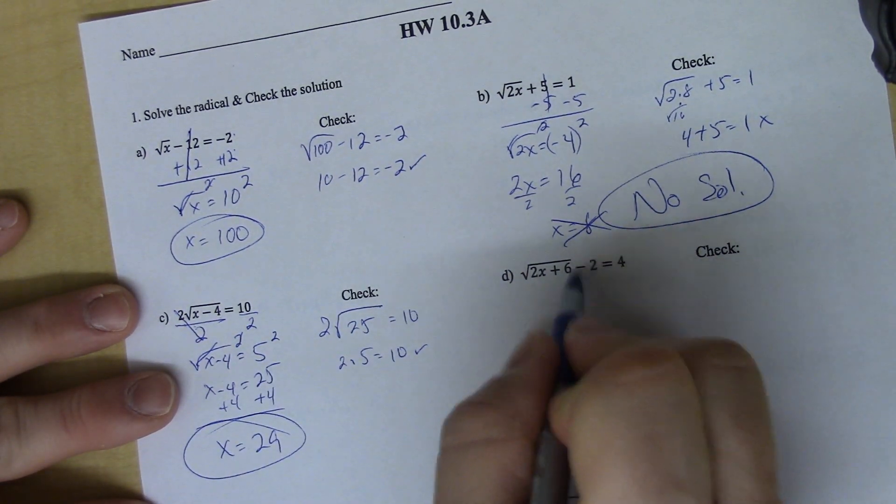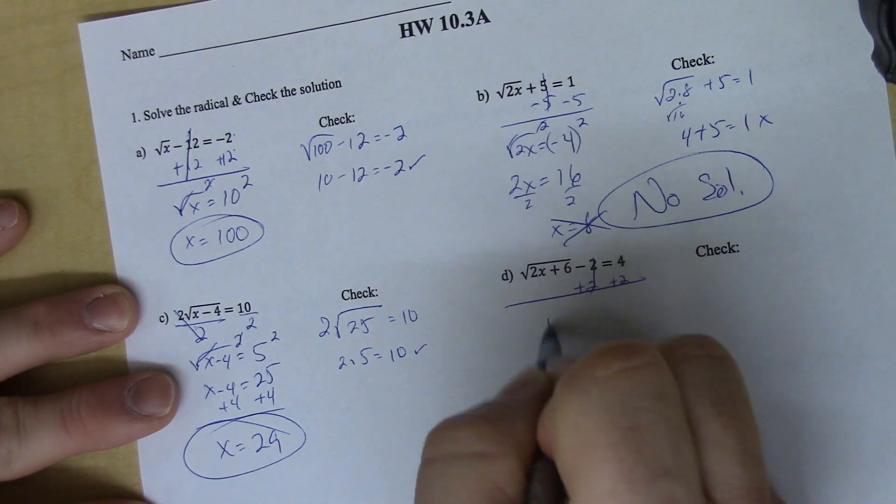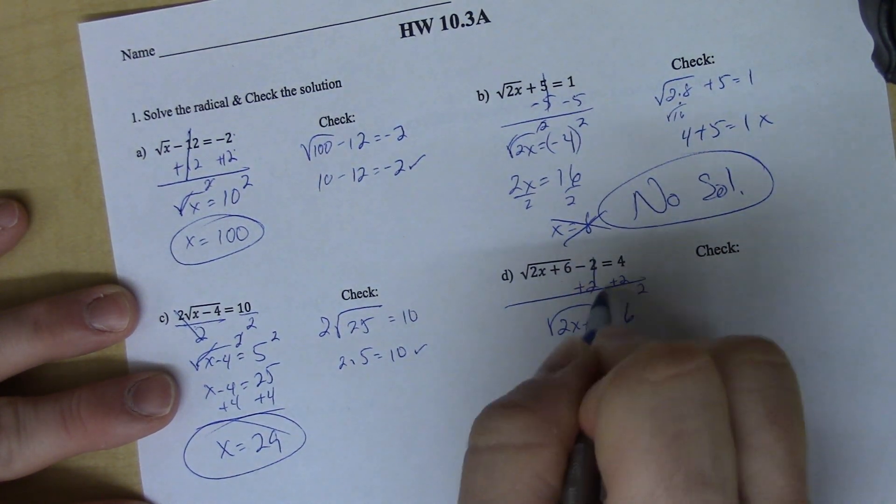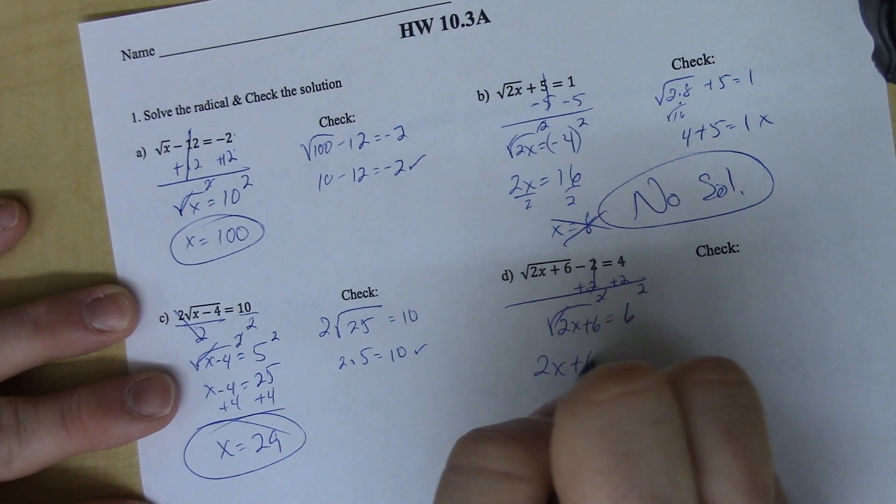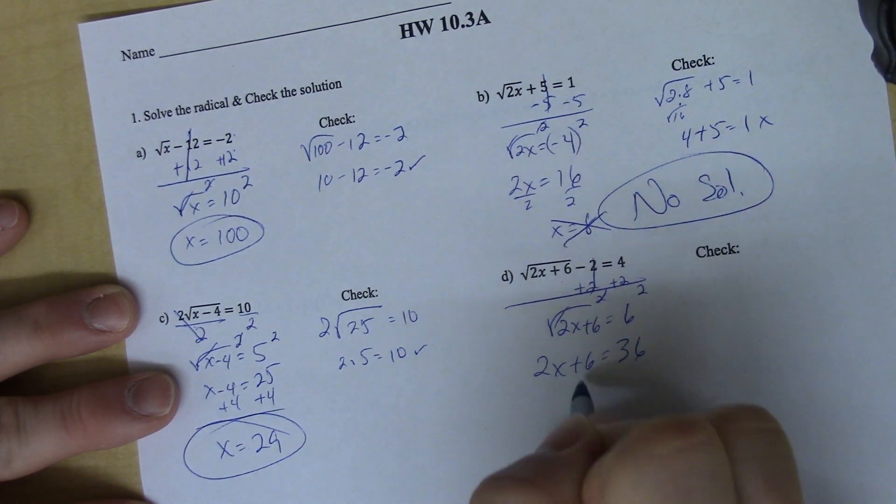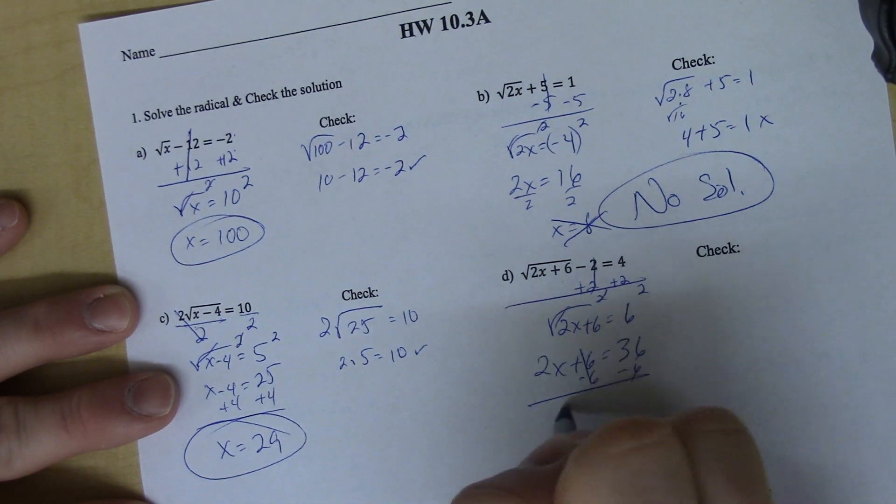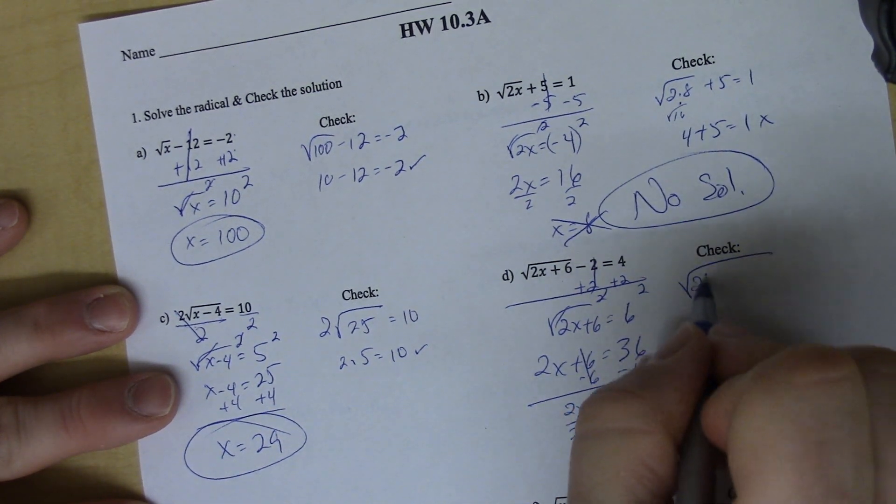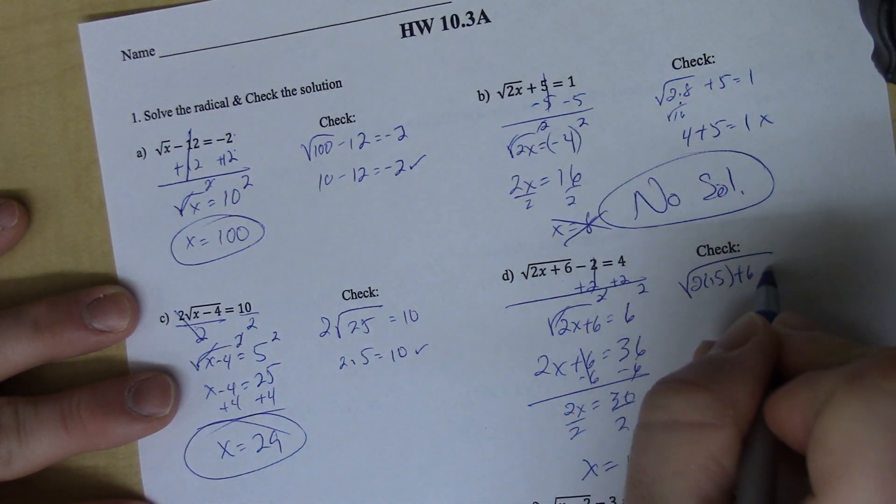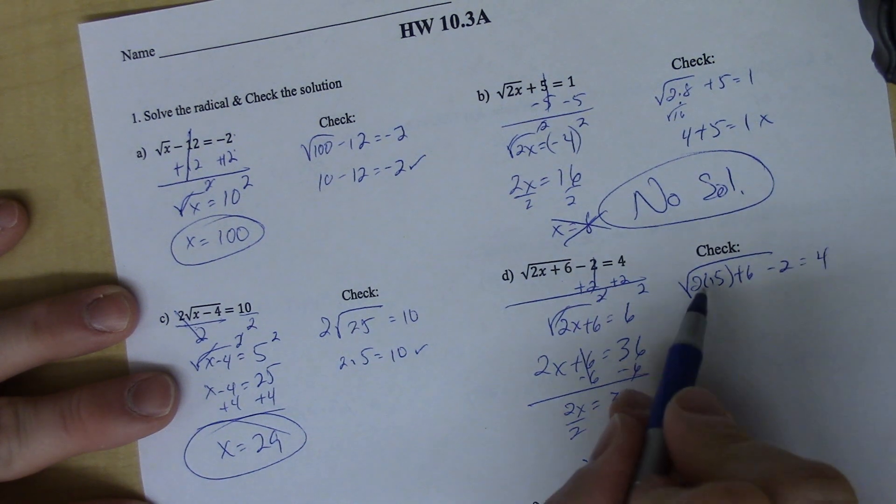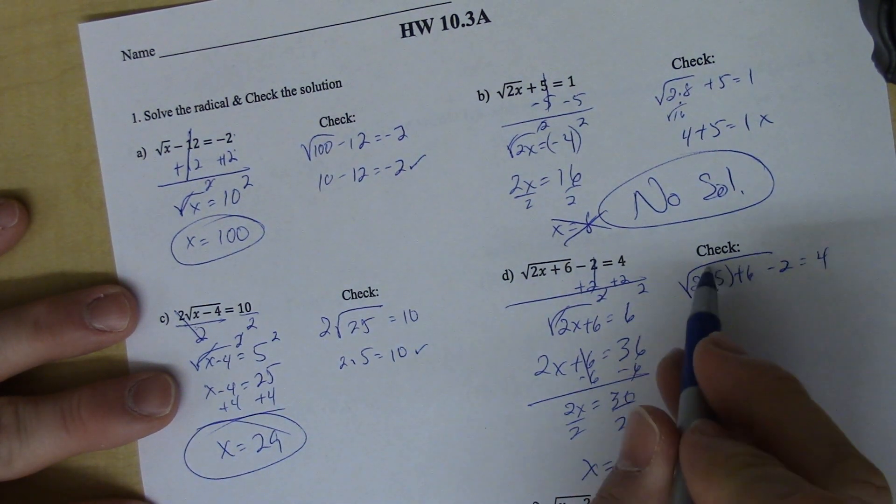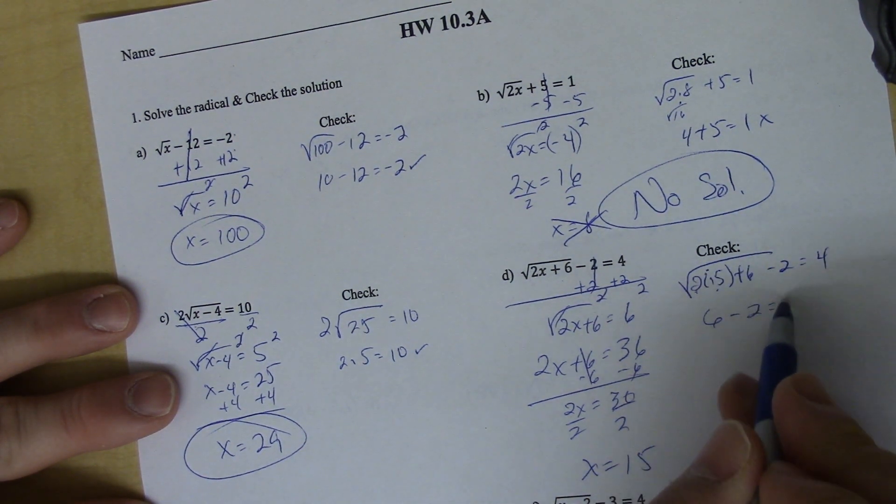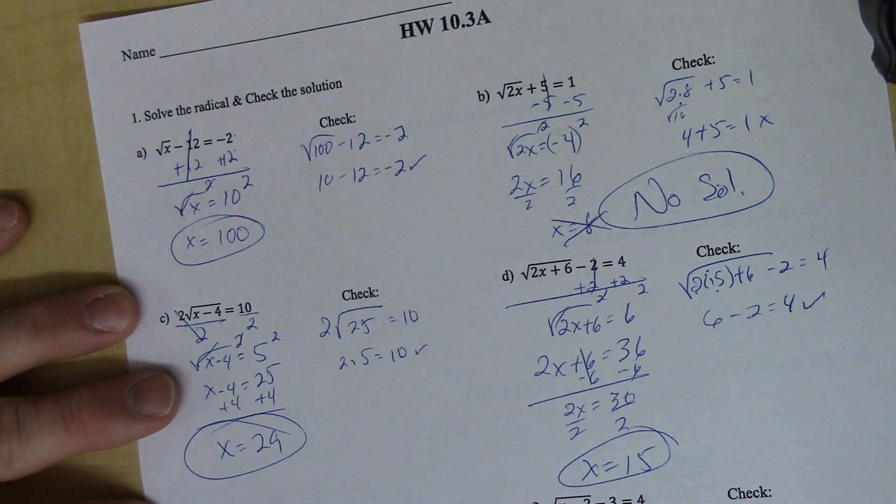The next problem, again, add or subtract first, so I get rid of that. And then I can square both sides to get those to cancel. And then minus 6, of course. And divide by 2 to get x equals 15. Let's go check it. 2 times 15 plus 6 minus 2. Does that equal 4? 2 times 15 is 30 plus 6 is 36, and the square root of that is 6 minus 2 is 4. It checks. There's my answer there.